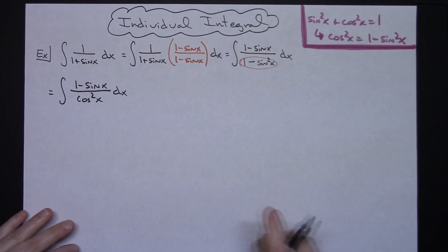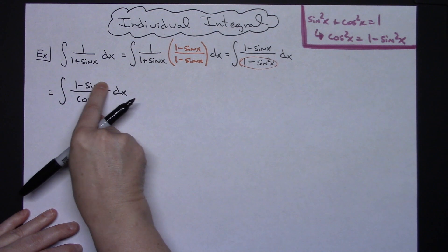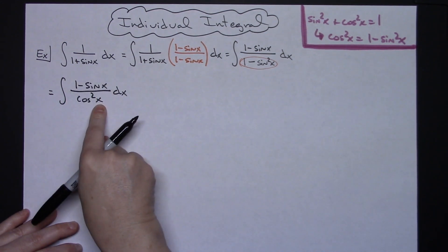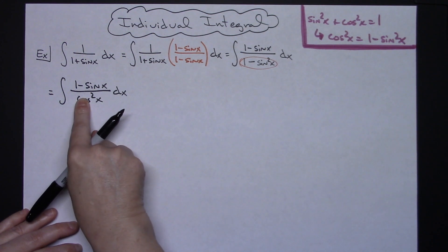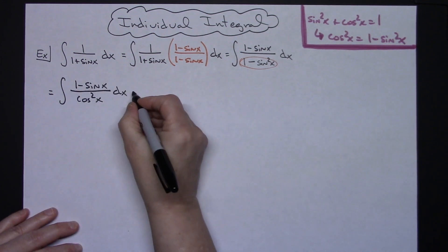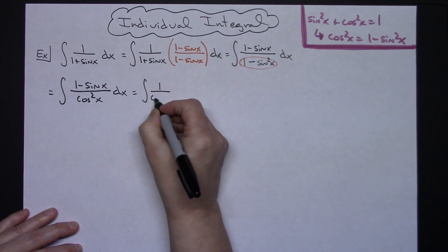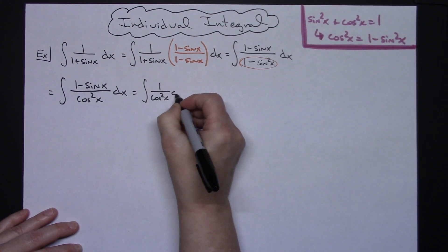Now at this point what I'm going to do is I'm going to take this since I have something in the numerator they're being subtracted I'm going to break this up into two individual integrals two individual fractions. So then I'm going to have the integral of 1 over cosine squared x dx.